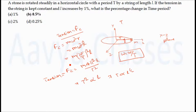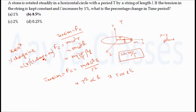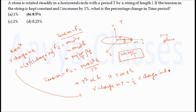As we have already learned in the error chapter, if K is of the form a^x, then percentage change in K equals x times the percentage change in A. Applying this formula here, percentage change in T equals (1/2) times the percentage change in L. Since the percentage change in L is 1%, the percentage change in time period T will be 0.5%. So the answer is 0.5%, which is option B.